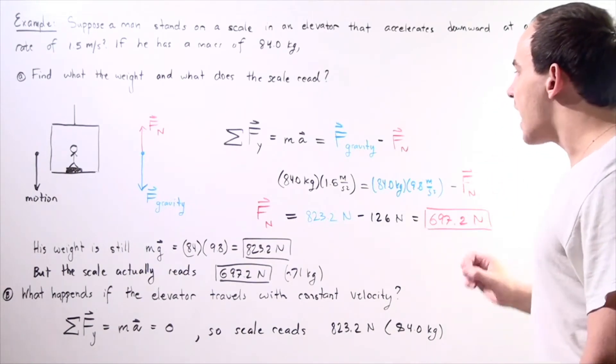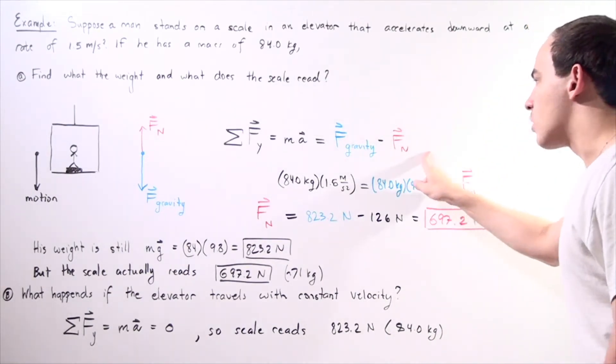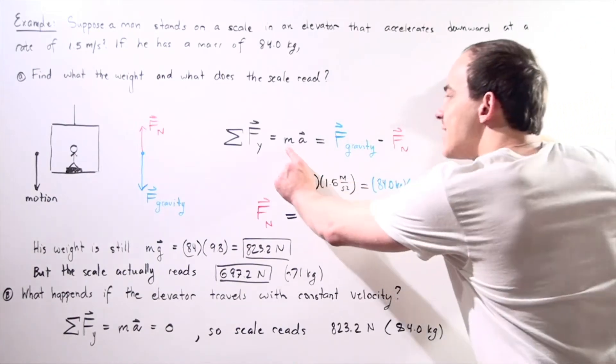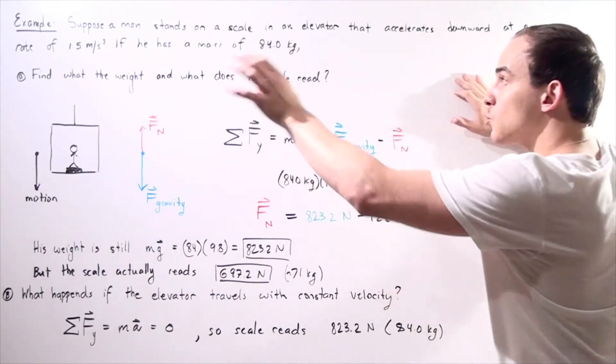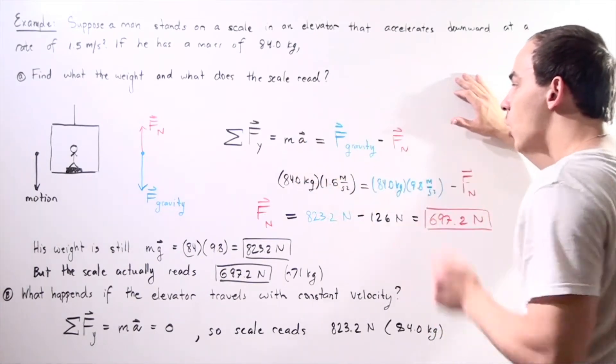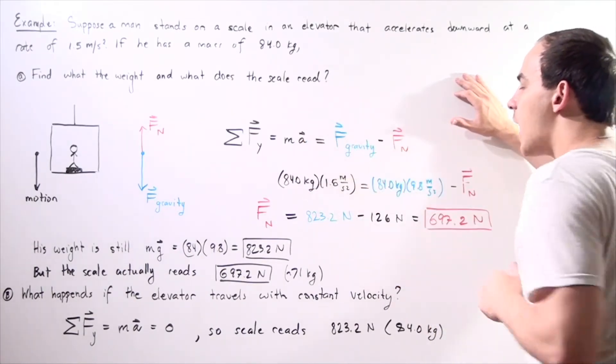We want to solve for our normal force. This is our unknown. We know what the mass is of that person, we know what the rate of acceleration is, and we also know the weight of the object.